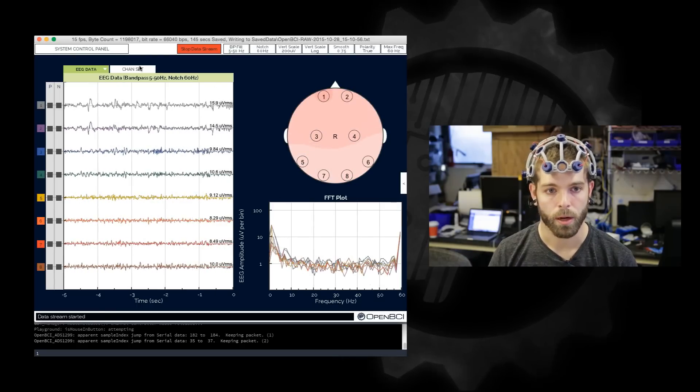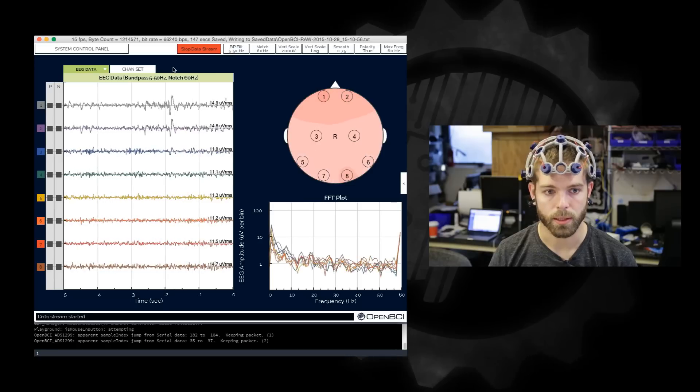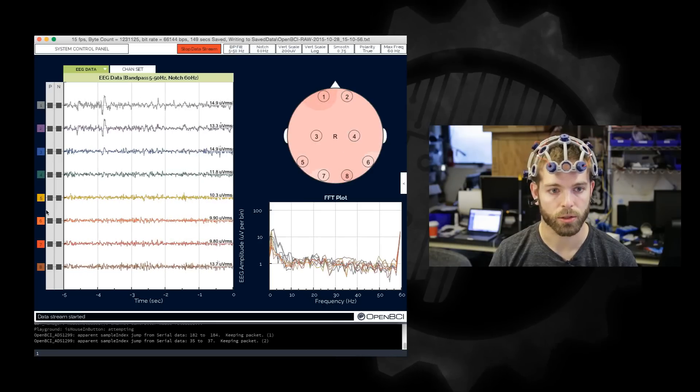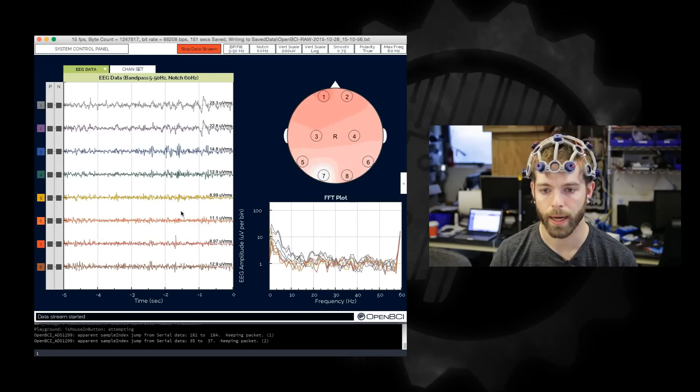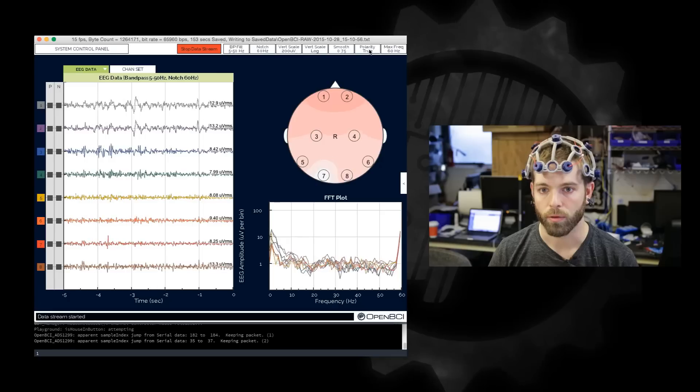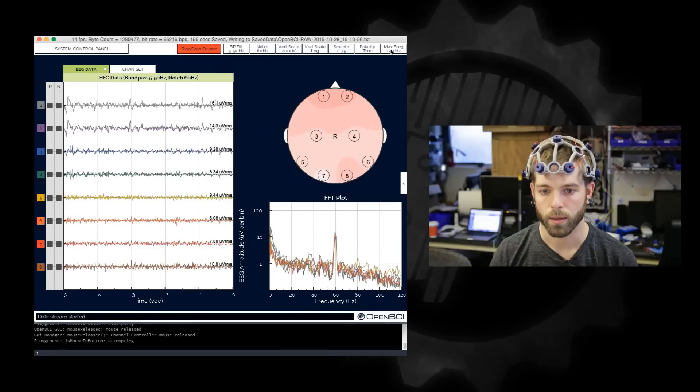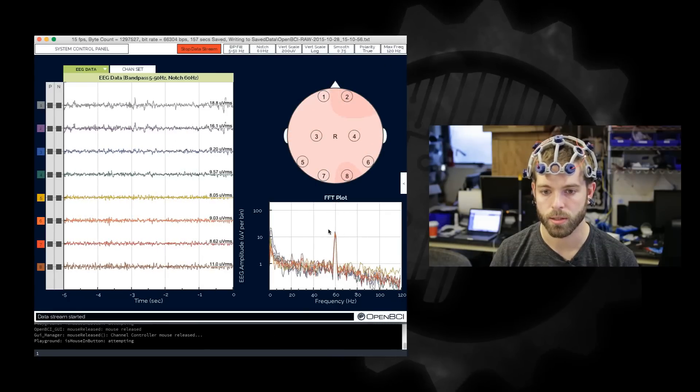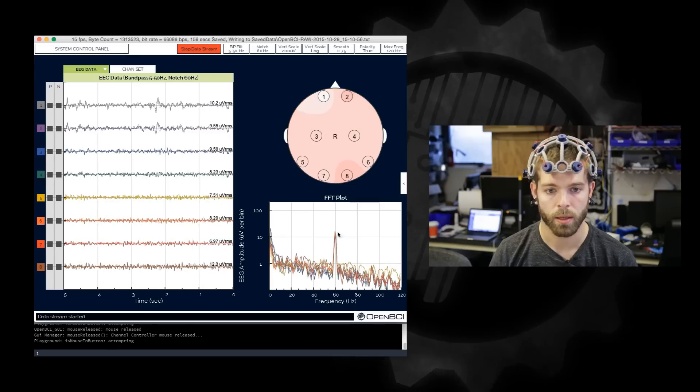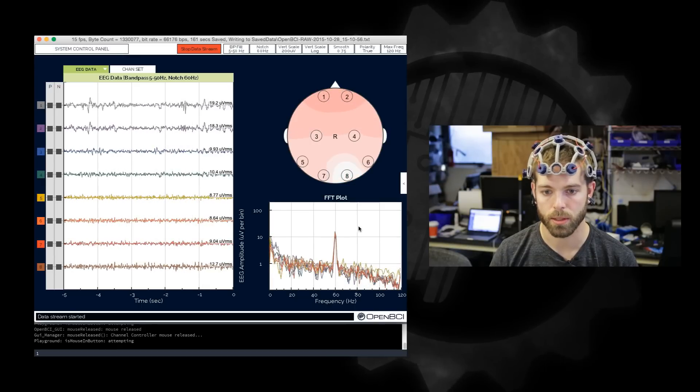And so there are a number of other things that you can do, such as check leadoff detection, turn channels on and off. You can scale the frequency domain. And there's our 60 Hertz signal that's being filtered out in the time domain but you can still see it in the FFT.